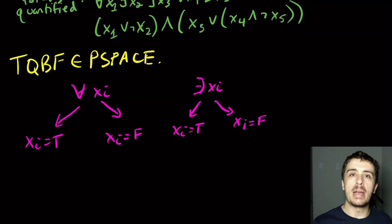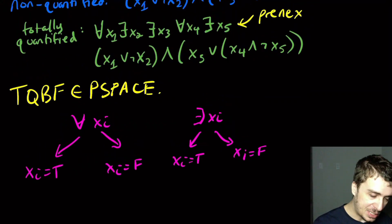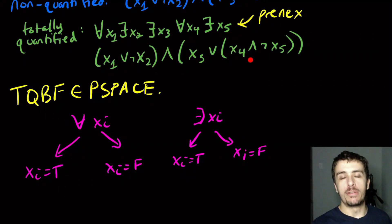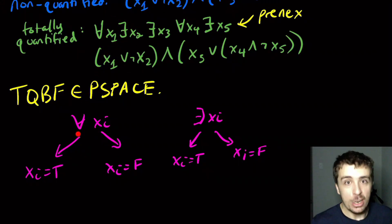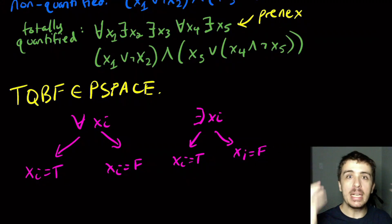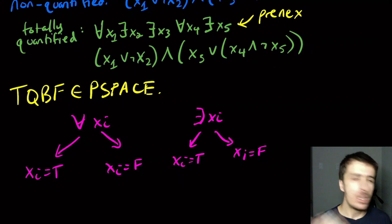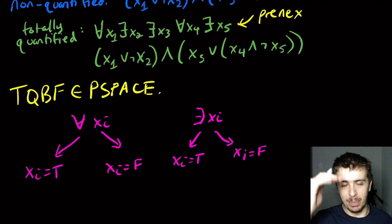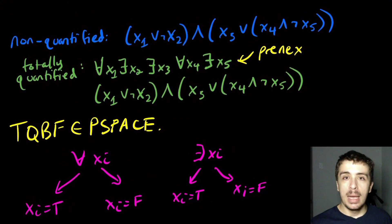You only need a certain amount of information per variable. At each level, you need to store the rest of the formula — which is linear space per variable. Since we have a linear number of variables and use linear space per variable, the total space is quadratic. That's a polynomial, so TQBF is in PSPACE. You could probably shave it below quadratic, but quadratic is sufficient.